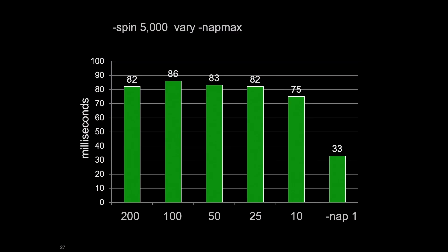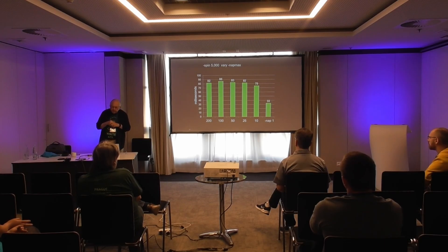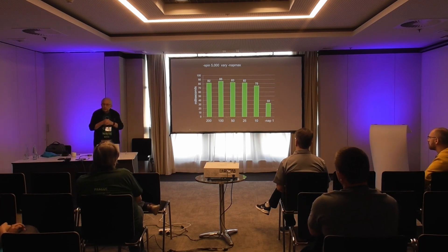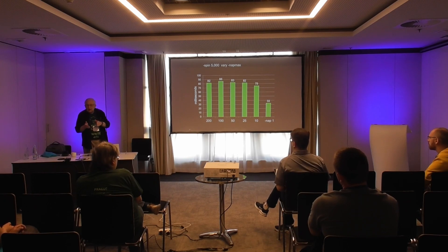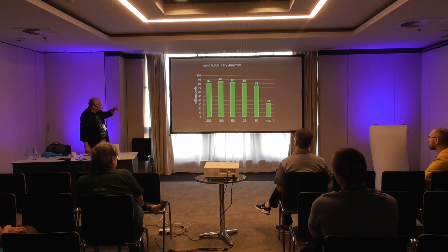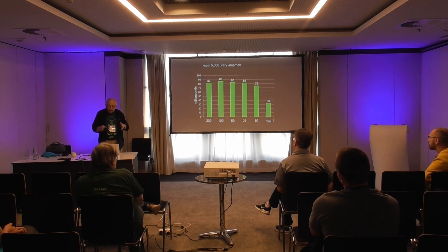If we start tuning the maximum nap time and measuring the transaction duration, you can see what happens as you shorten the maximum nap time. The last box on the right is just for reference — that's as low as you can get. You can see that varying napmax doesn't have a huge effect, but it has some — you're lowering the transaction duration a bit, getting down to 75, but not to 33, which is where you want to get. That's with -spin set at 5,000.